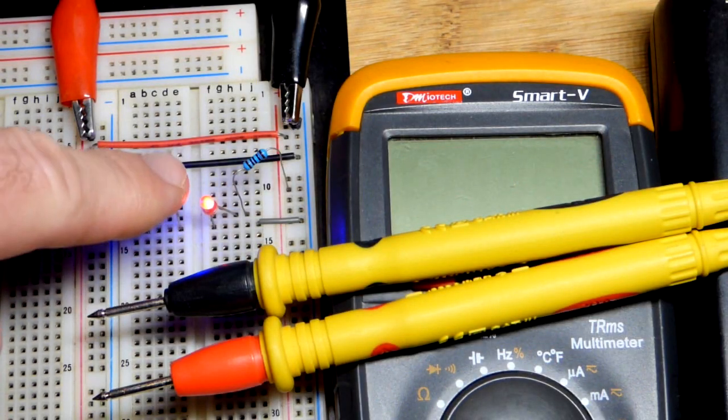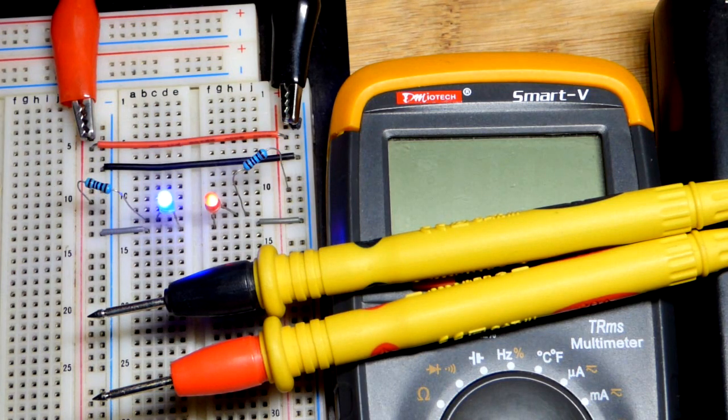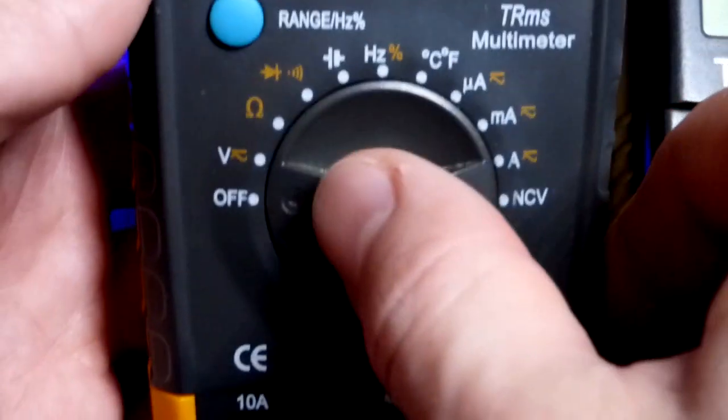In this video we're going to measure the voltages of an LED protected by a resistor circuit. Make sure the red probe is where you got V there, the black probe where you got COM.